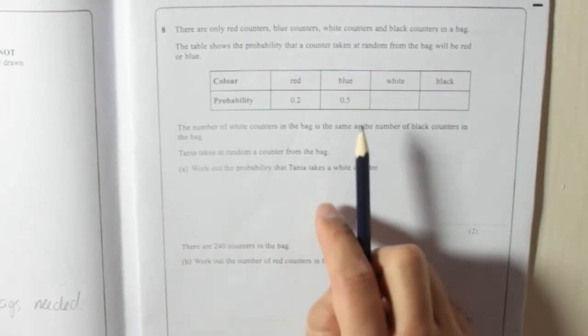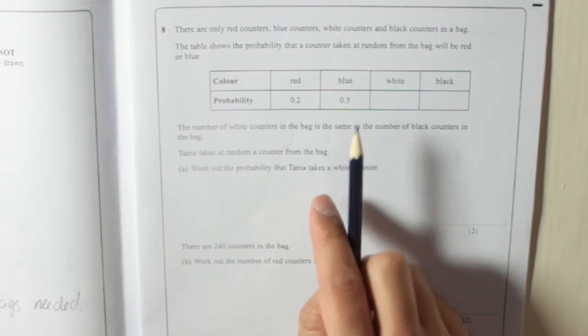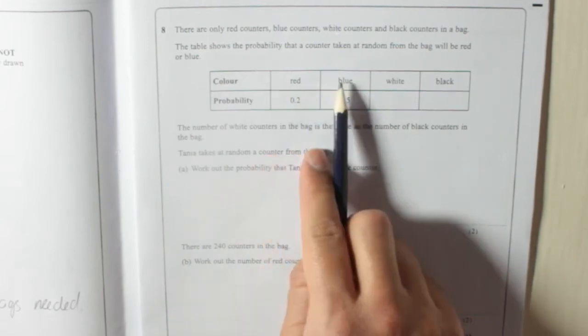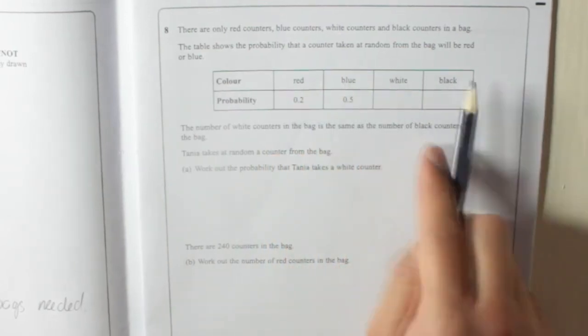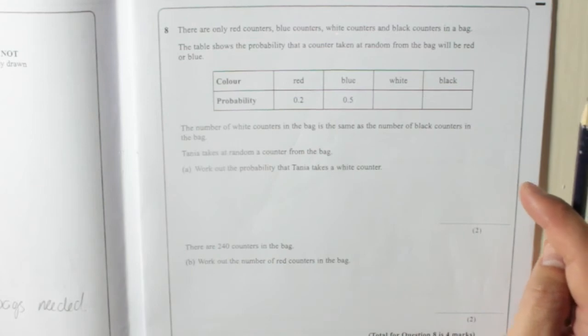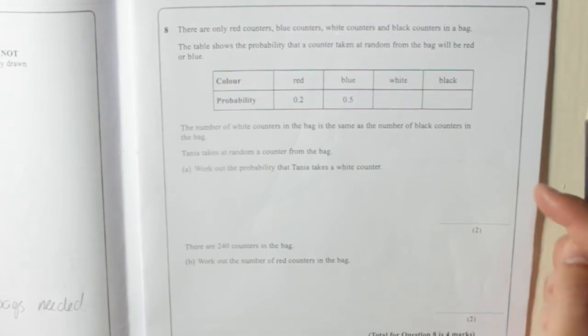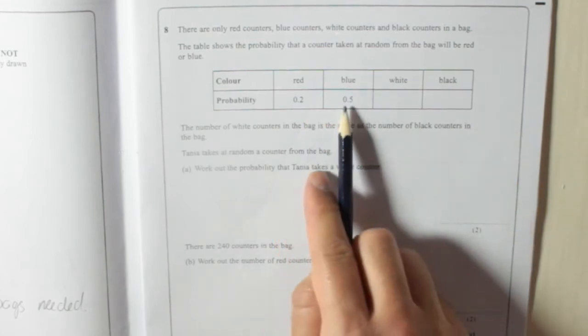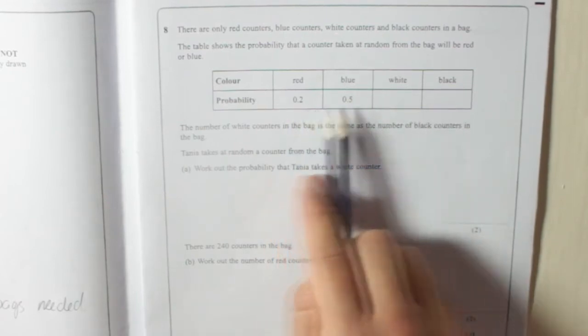Right. So remember probability. Because the only thing that can happen is that you get red, blue, white or black. And because you're only taking one counter, they must add up to 1, all of them.